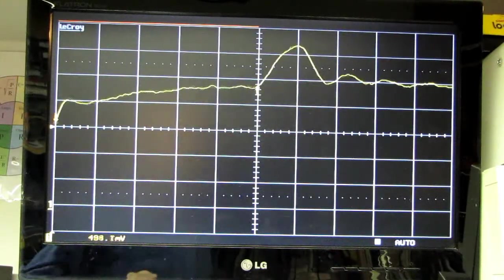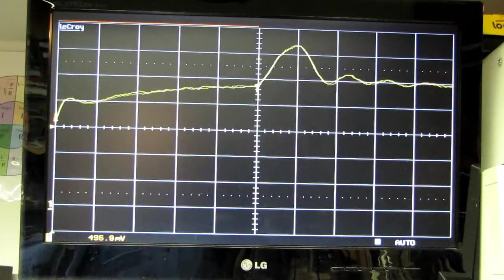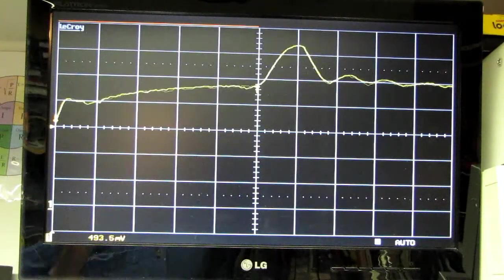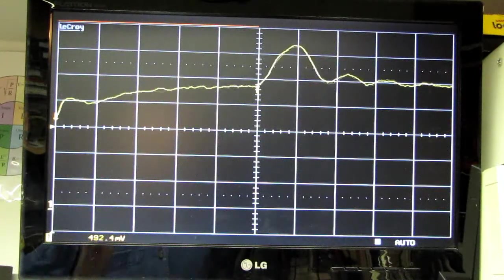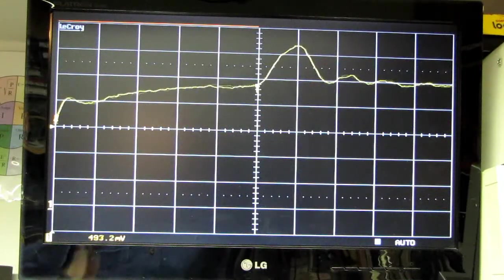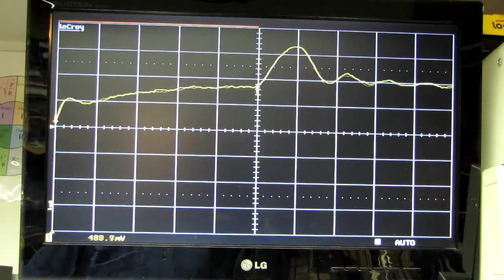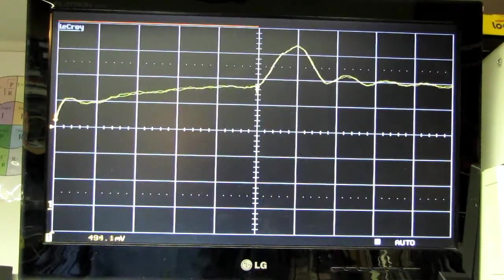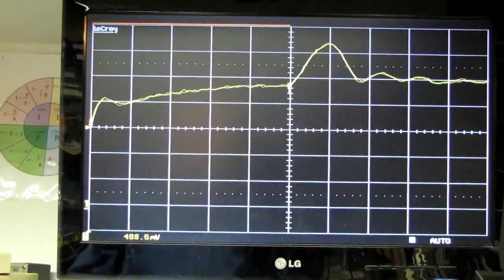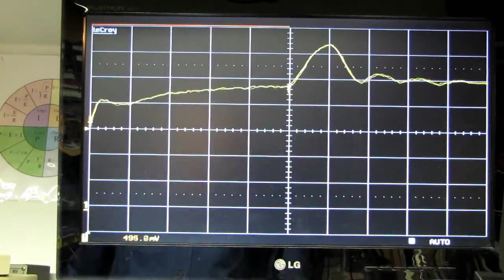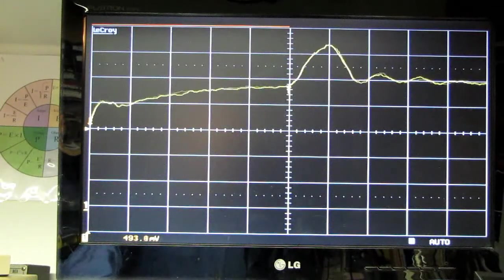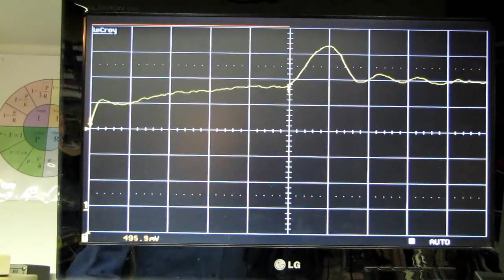We know that electricity or a radio signal in free space goes 11.803 inches in one nanosecond. So 11.803 per nanosecond.